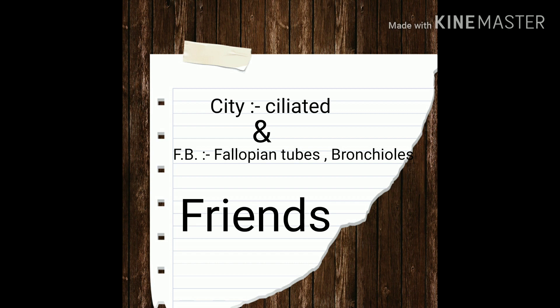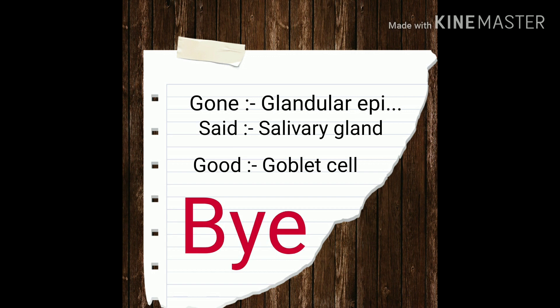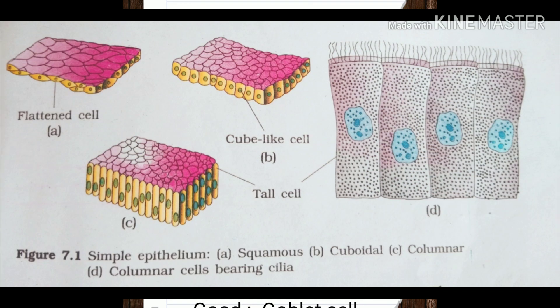The next words are 'friends' and 'gone' — these represent glandular epithelium, which is found in salivary glands and goblet cells. In the sentence, 'said' represents salivary glands and 'good' represents goblet cells. The last word 'bye' is only for completing the sentence.